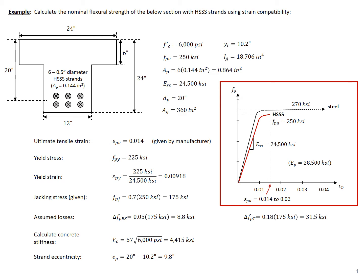In this example problem, we're going to calculate the nominal flexural strength of a T-section with high-strength stainless steel strands using strain compatibility. It's a T-section with a top width of 24 inches and six half-inch diameter high-strength stainless steel strands. These strands have a specified area of 1.44 square inches per strand, which is different than our conventional steel pre-stressing strands — this is specified from the manufacturer.